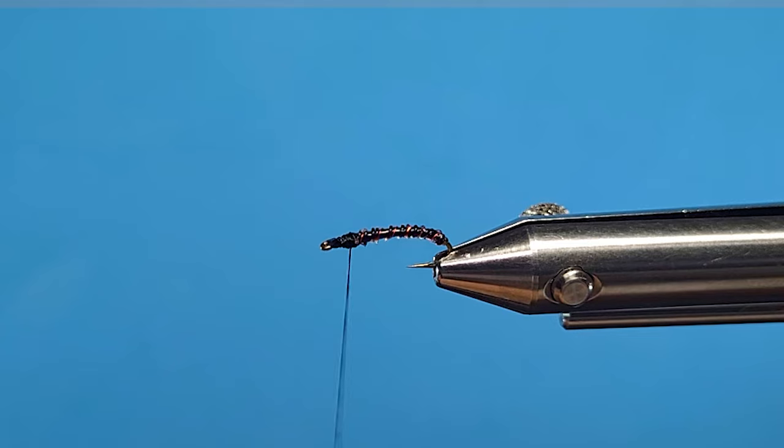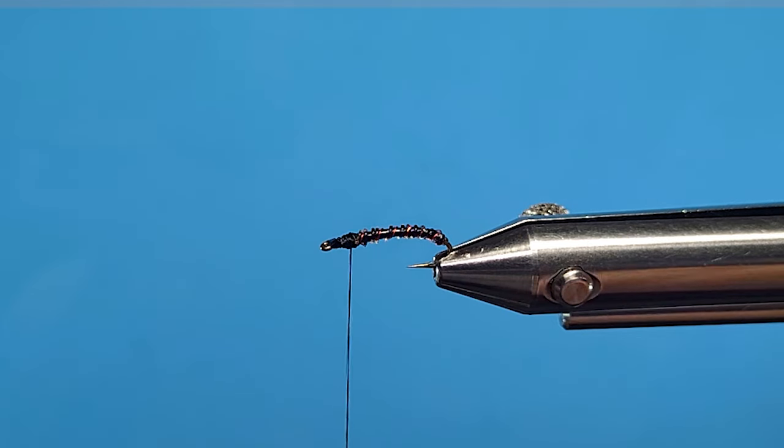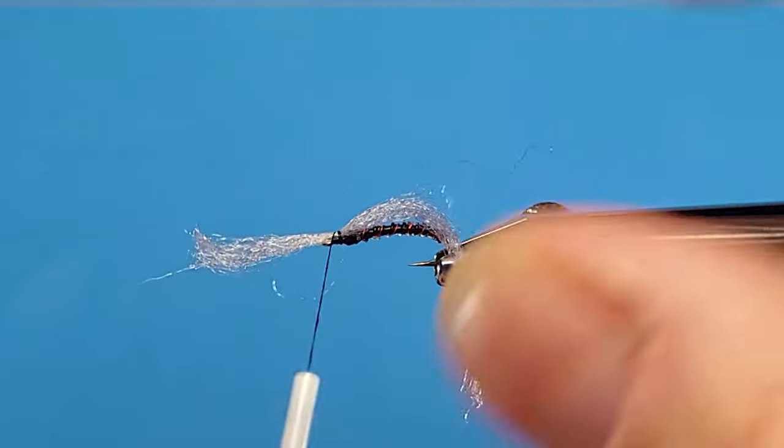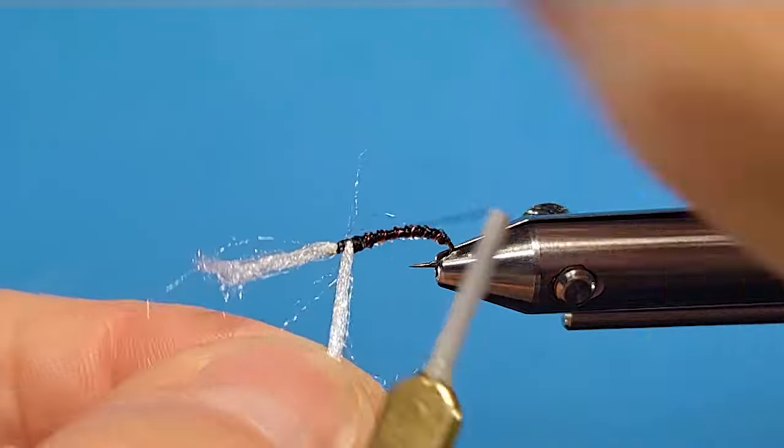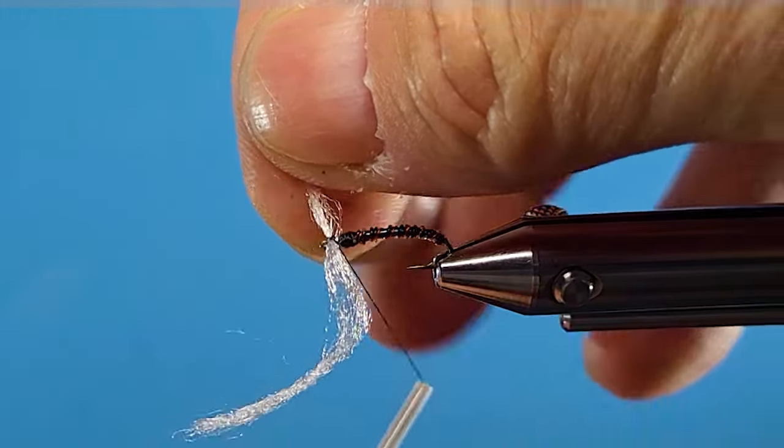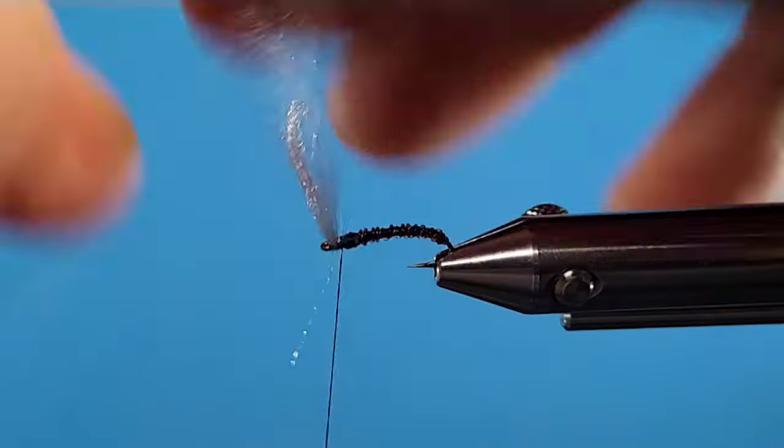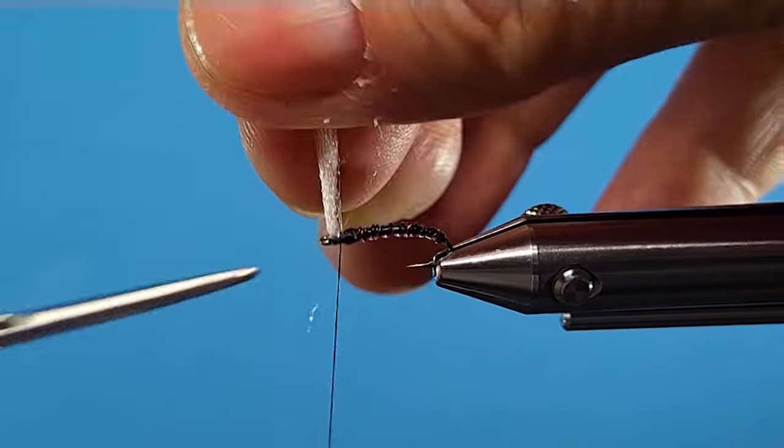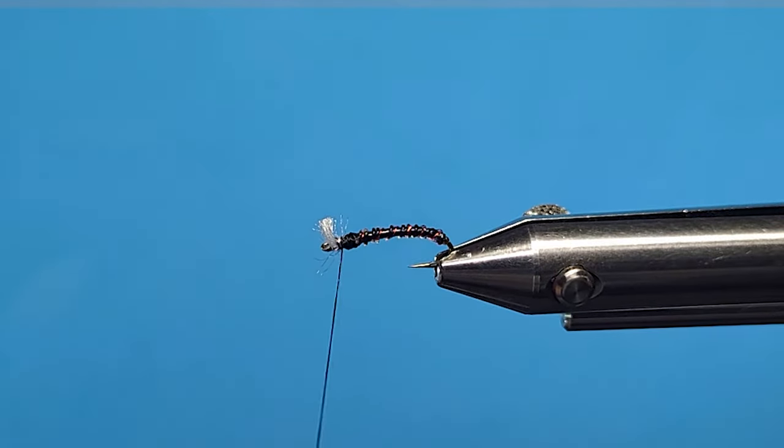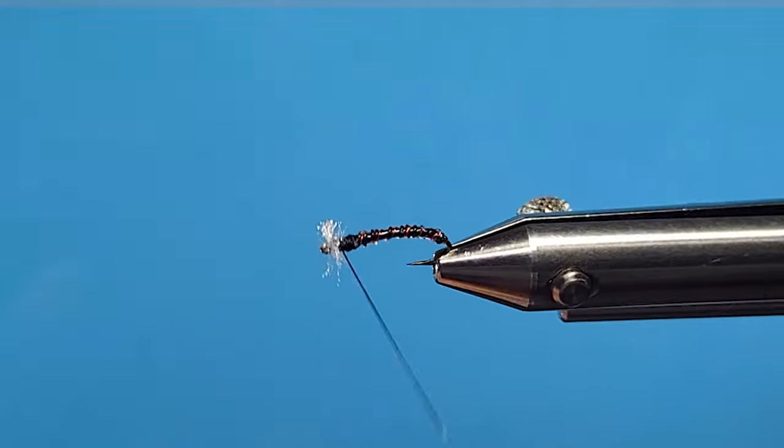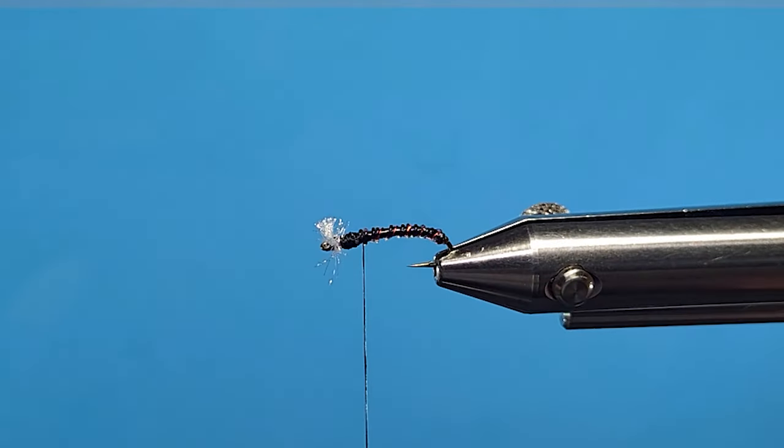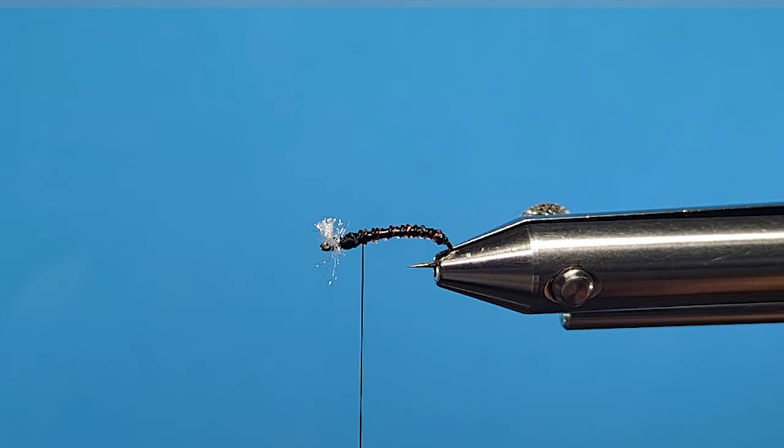So I'll just bring in some of this Antron at the front here. And I'll X that on the front. The way Brian Chan used to do them years ago. I remember that. I always liked the gill appearance that way, a little split. You can trim a little tighter if you want.